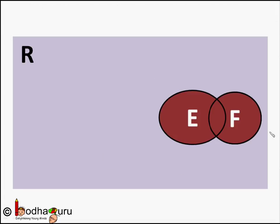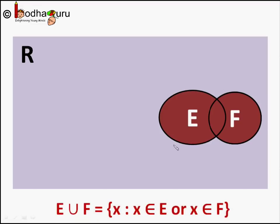Now this entire diagram in dark red represents a set which contains whole numbers which are either even number or divisible by 5 or both. And that set is called union of set E and set F. We write it like this: set E union F.